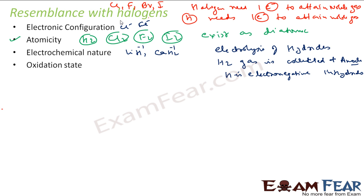The next is the oxidation state. So if you see for chlorine and all, the oxidation state is minus one most of the time. In case of hydrides, the oxidation state of hydrogen is also minus one.